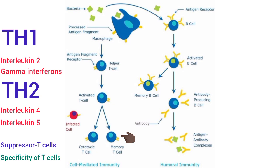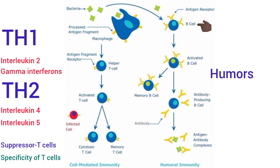Humoral immunity is defined as the immunity mediated by antibodies secreted by B lymphocytes. The B lymphocytes secrete antibodies into the blood and lymph, which are body fluids called humors. Since the B lymphocytes provide immunity through humors, this type of immunity is called humoral immunity or B cell immunity. Antibodies are the gamma globulins produced by B lymphocytes.